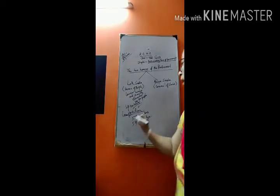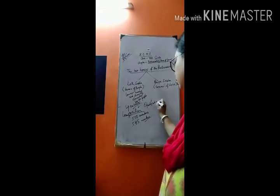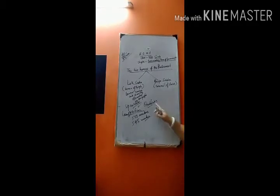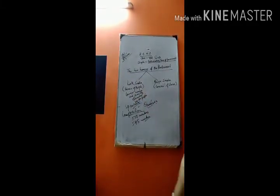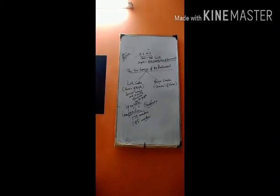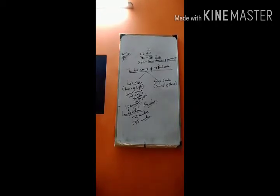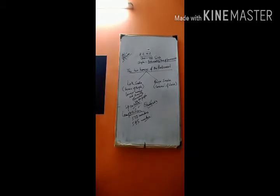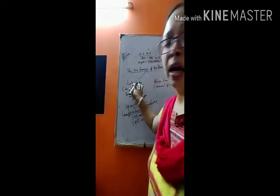Now we will read about the qualifications for becoming a member of the Lok Sabha. First, he should be a citizen of India. He should not be less than 25 years of age. He should not hold office of profit under the Government of India. He should not be bankrupt or of unsound mind.